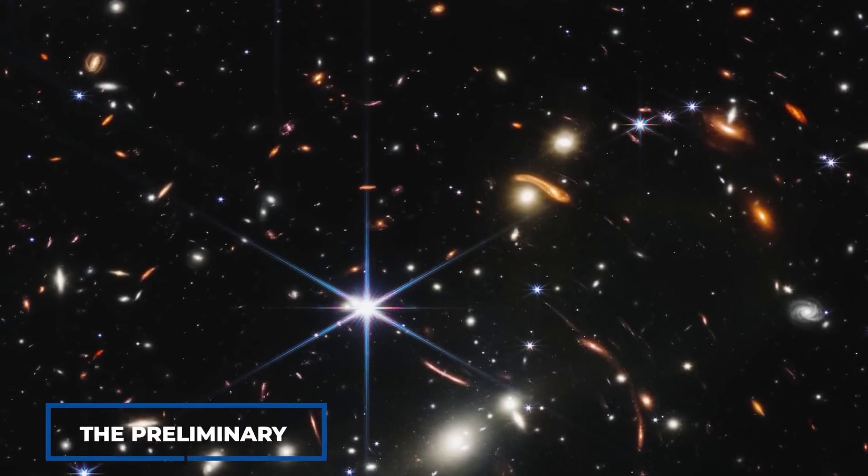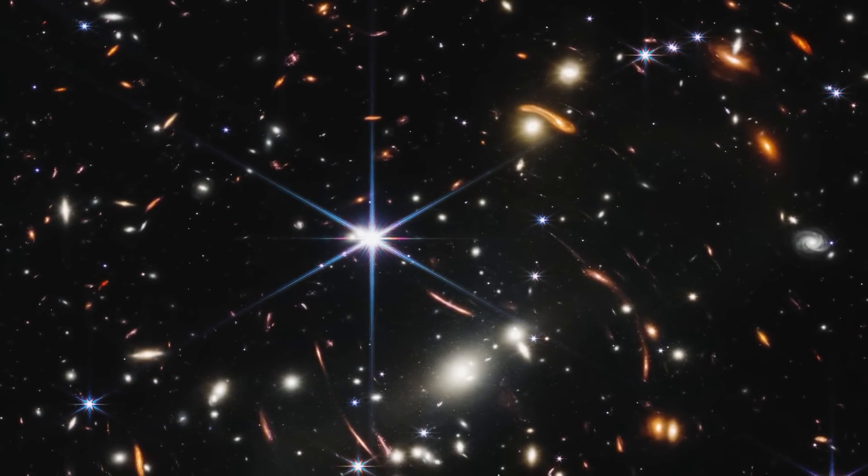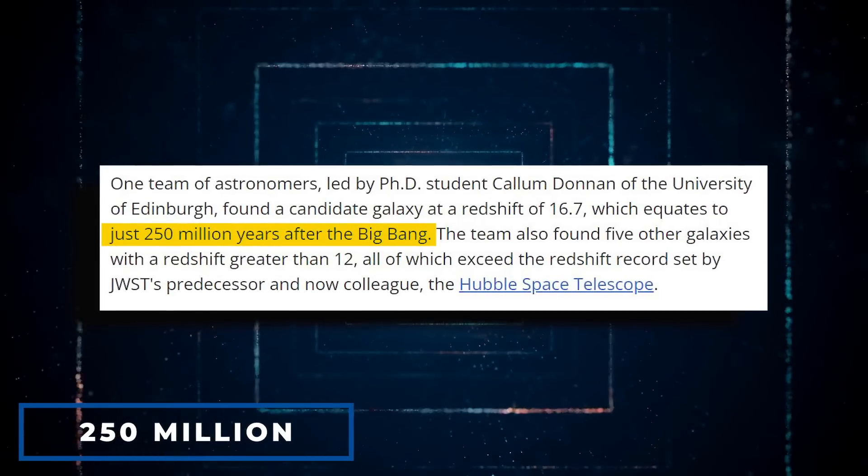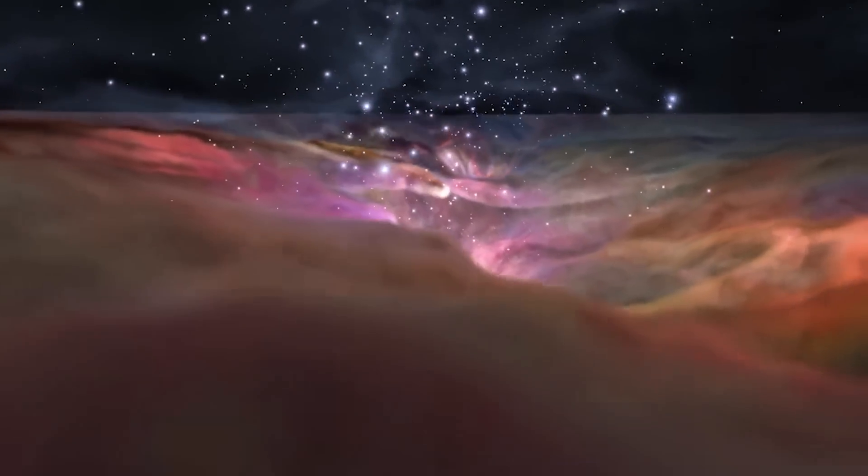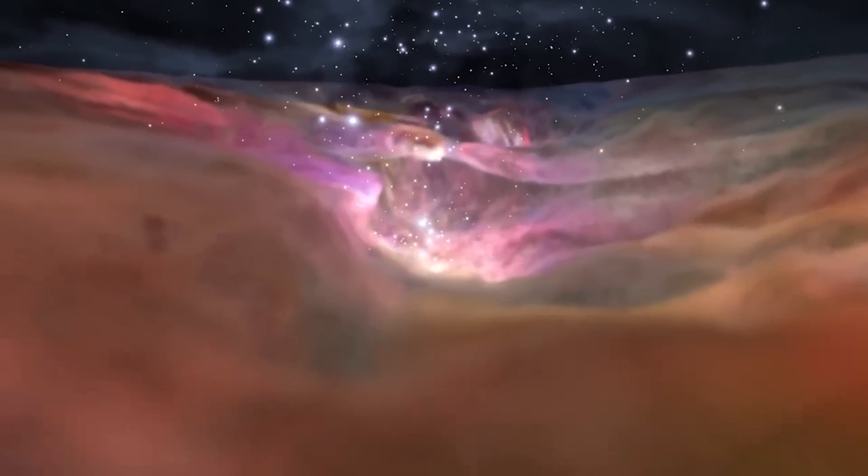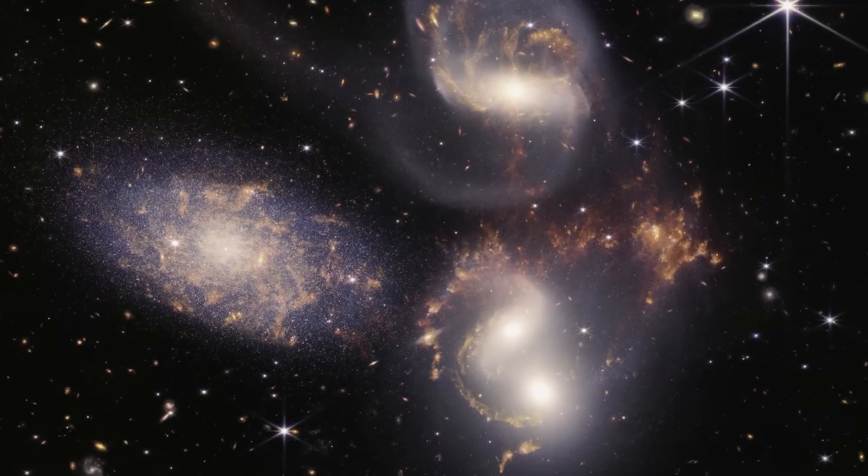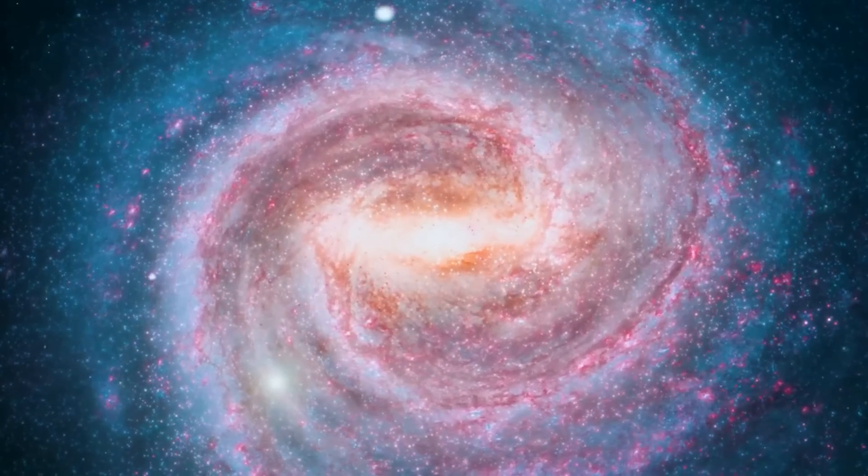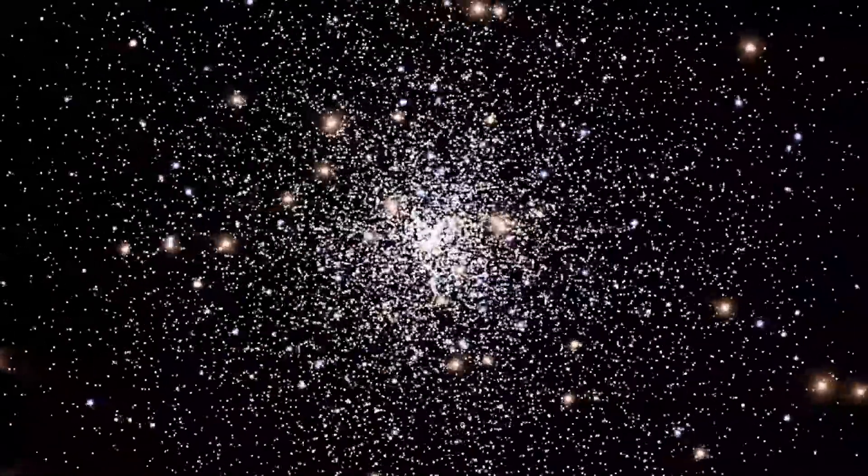The preliminary results of the James Webb Space Telescope appear to indicate that large, dazzling galaxies formed during the first 250 million years after the Big Bang. If this is verified, it will severely undermine current cosmological views. Many of these galaxies appear to be more massive than the classical cosmological model. To be fair, these are preliminary findings that have yet to be confirmed.